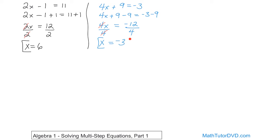To check your work, stick it back into this value here. 4 times negative 3 is negative 12. Negative 12 plus 9 is indeed negative 3. And I think you can convince yourself of that.